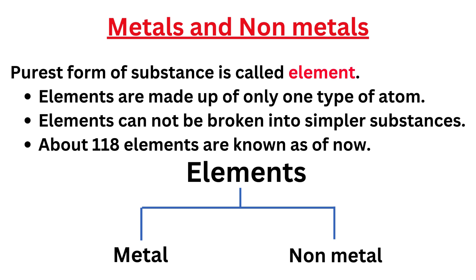An element is a substance which is made up of only one type of atom, and an element is the purest form of substance. Elements cannot be broken into simpler substances. For example, agar hamne gold liya — gold ke andar sirf gold ke atoms honge, and this gold cannot be further broken down. If you break it down, you will get the gold atom only.